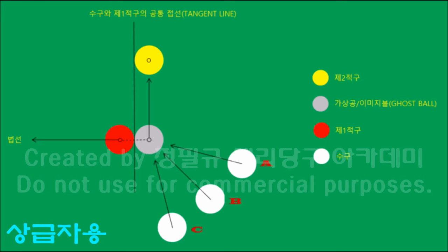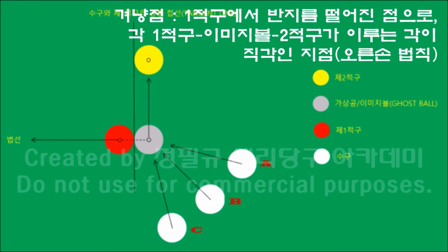이 이론에서 어려운 부분은 이미지볼의 중심점을 찾는 일입니다. 겨냥점은 이미지볼의 가운데 작은 원이며, 제1적구에서 반지름만큼 떨어진 점입니다. 제1적구·이미지볼·제2적구 세 공이 이루는 각이 직각인 지점입니다. 오른손을 펼칠 때 엄지손가락은 빨간 공 방향, 나머지 네 손가락은 노란 공 방향을 가리킵니다. 이렇게 직각을 이루면서 제1적구에서 반지름만큼 떨어진 점이 겨냥점입니다.